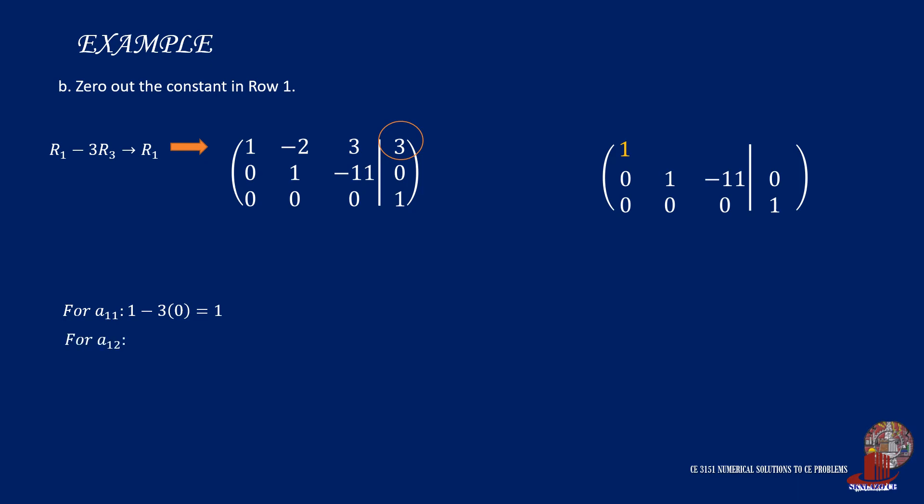To complete the constant column, we zero out the constant at row 1 by reducing row 1 with thrice of row 3. Starting with element 1,1, we have 1 minus thrice of 0, equal to 1. Element 1,2 has negative 2 minus 3 times 0, to get negative 2.